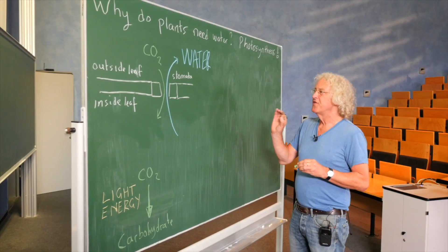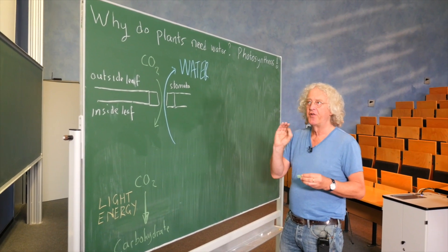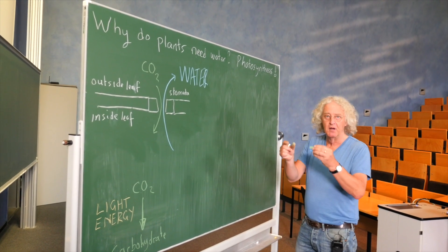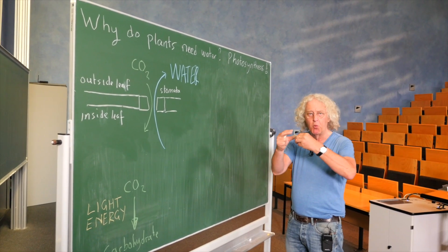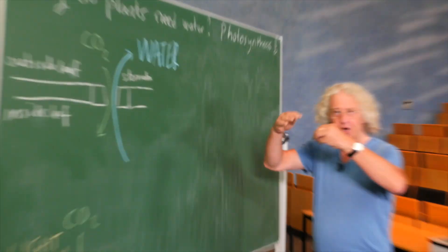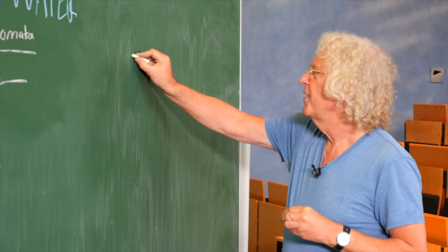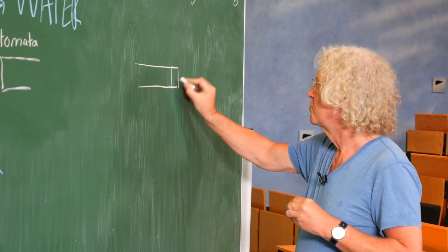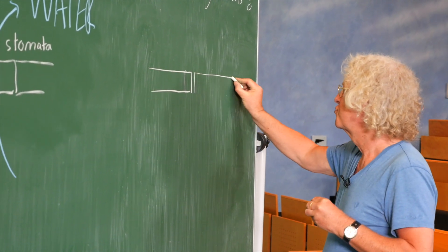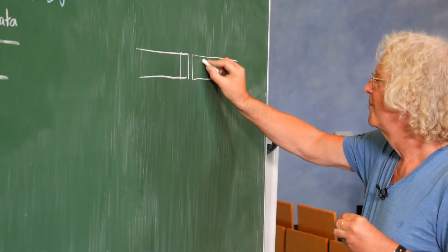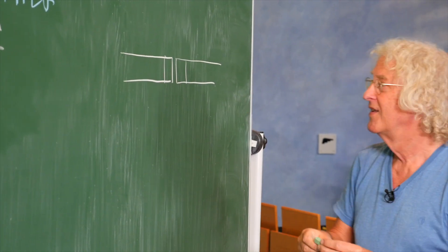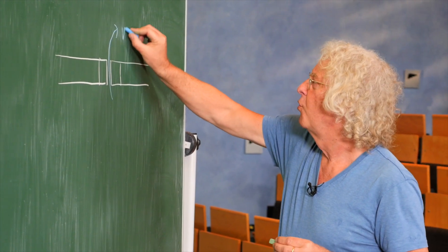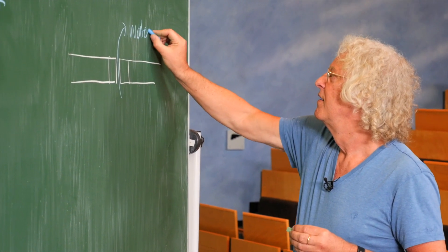But what if the plant doesn't have enough water? When the plant doesn't have enough water and it starts to lose water in the leaves, they go floppy. What happens is that the stomata close. And I've just drawn this here very schematically, a smaller hole. The small hole is smaller, and so less water goes out.